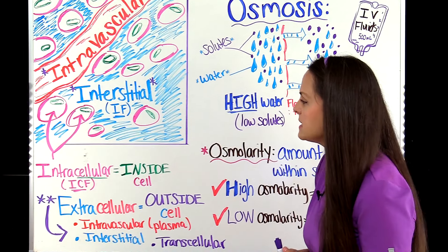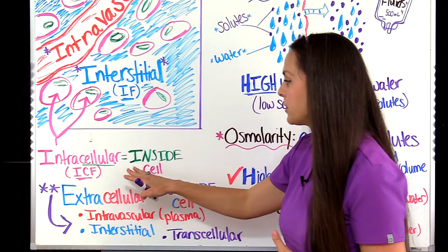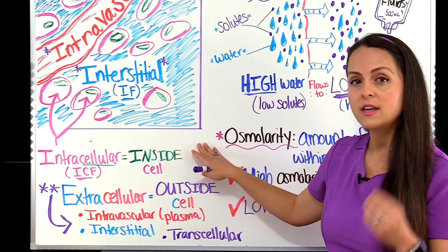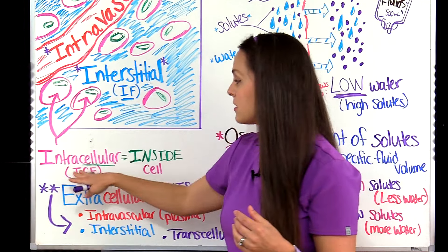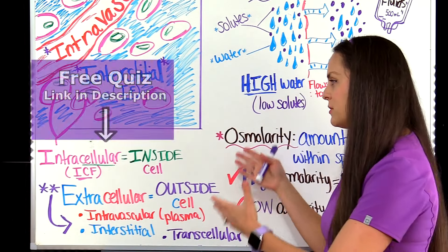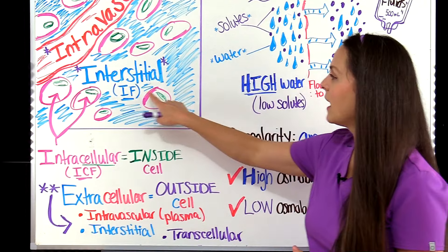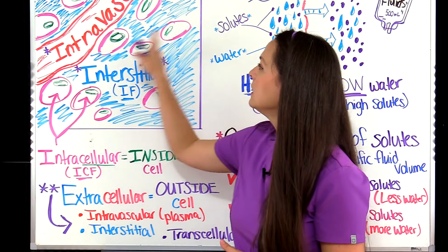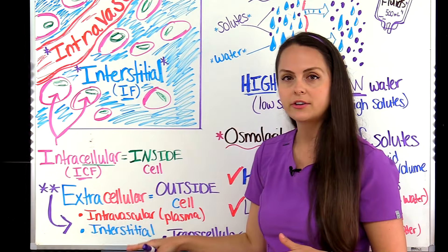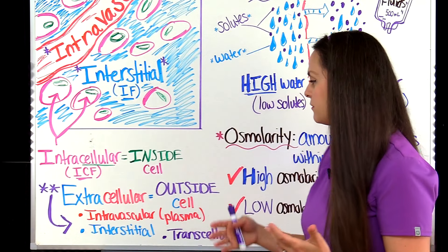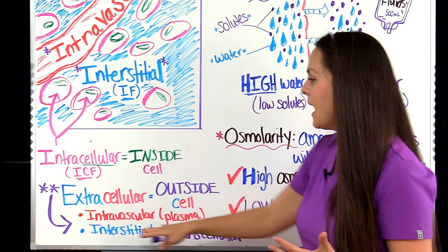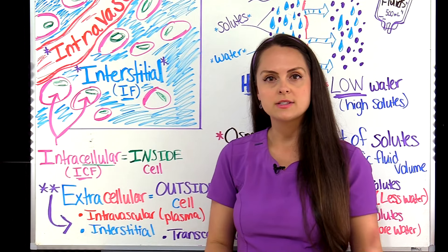The first compartment is known as the intracellular compartment and this is the fluid that's found within the cell — 'intra' means within. So remember this is the fluid inside of our cell. Then we have the extracellular compartment and this is the fluid found outside of that cell — 'extra' means beyond or outside.